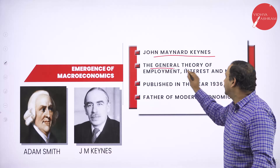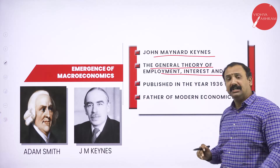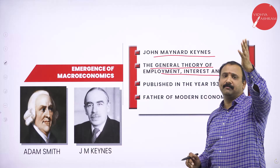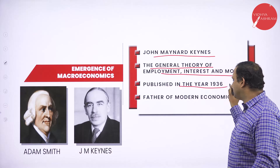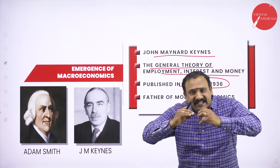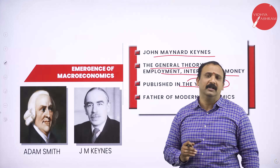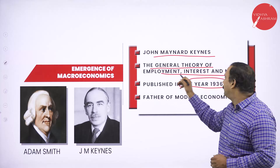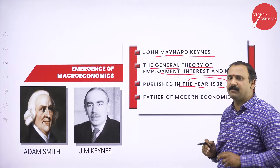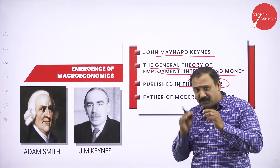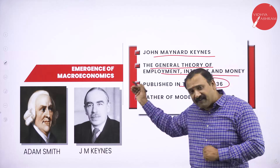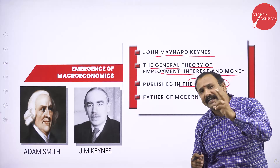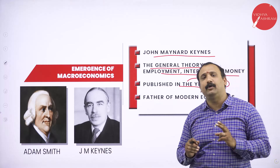He wrote the book The General Theory of Employment, Interest and Money — a very important book. I would say it is the milestone, the epitome of modern macroeconomics. When this book was published in the year 1936, it turned the entire way economics had to be looked at. John Maynard Keynes was the first person who had tried to emphasize upon the factor called employment and production, including interest and money. After the depression of America, it was John Maynard Keynes who took the initiative of making macroeconomics very important for any nation's development.